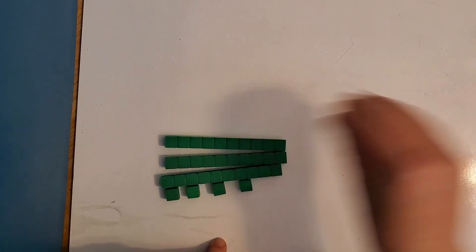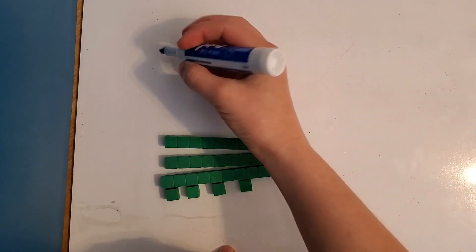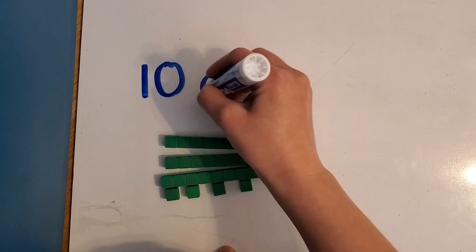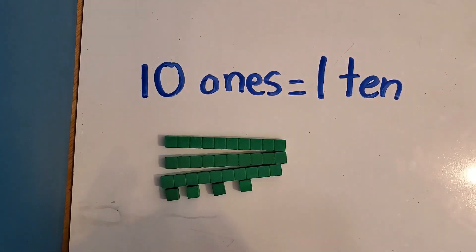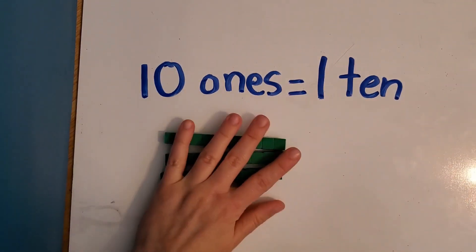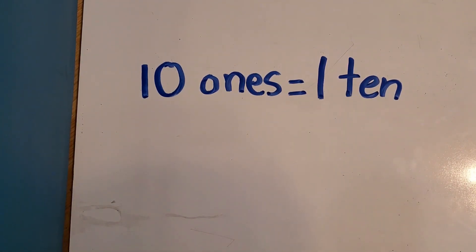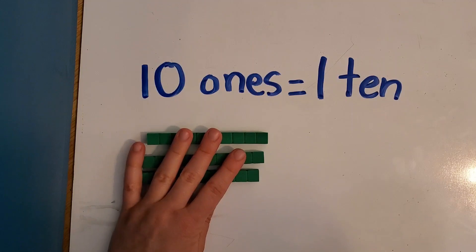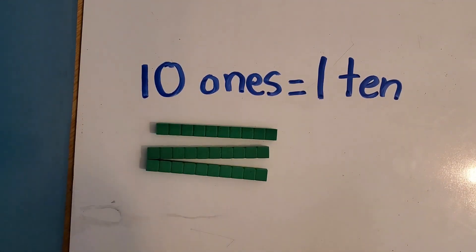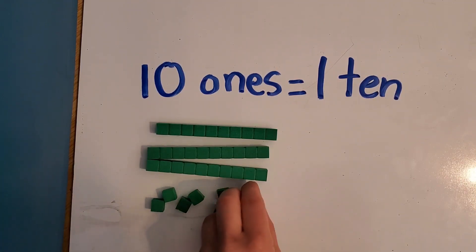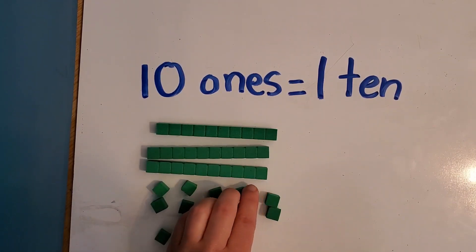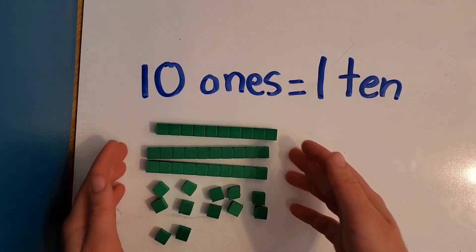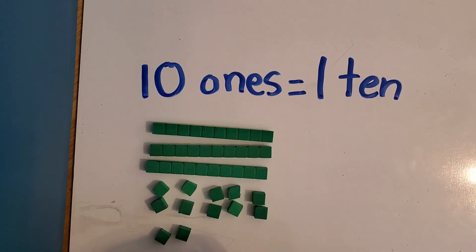Remember, when you're doing this lesson, ten ones equals one ten. Let's try another problem. We have three tens and twelve ones. Two, four, six, eight, ten, twelve. All right, here we go. Now we have three tens and twelve ones.